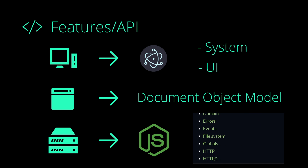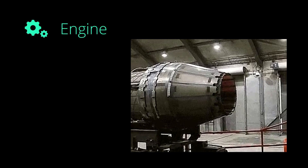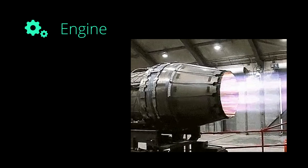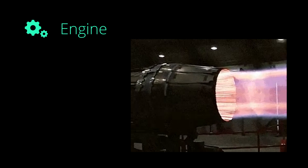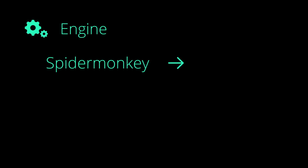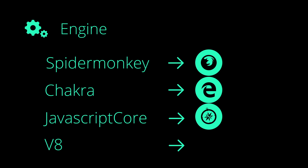Now let's look at the second half, which is the engine. It is the part where JavaScript code turns into an executable one. We have a few different engines, such as SpiderMonkey from Mozilla, Chakra from Microsoft, JavaScriptCore from Apple, and finally V8 from Google, which is one of the most widely used engines. In fact, Node.js and Deno both use the V8 engine.